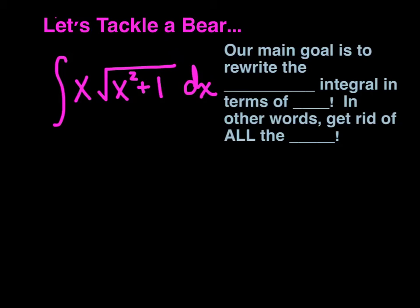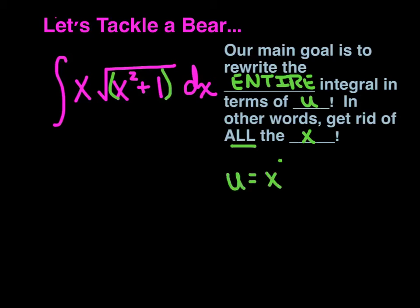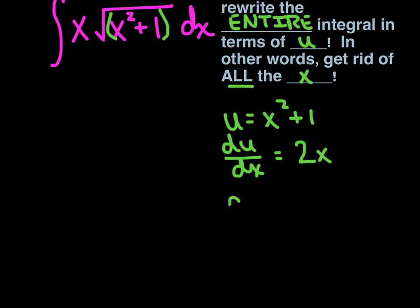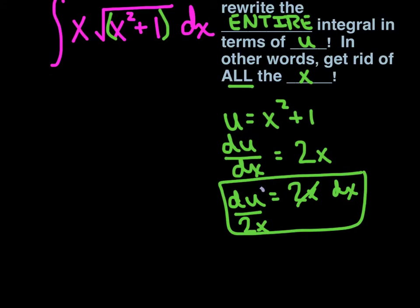Our one big goal today is to rewrite the entire integral in terms of u — in other words, we want to get rid of all of the x's within the problem. So we let u equal the inner function, then derive both sides with respect to x: the derivative of u with respect to x equals 2x. We solve for dx by multiplying dx to the other side and dividing both sides by 2x, isolating dx. We then substitute du over 2x in for dx, and substitute u in for the inner function.